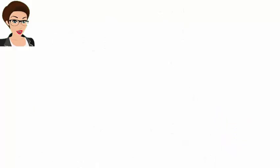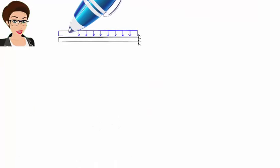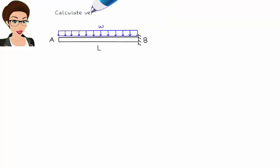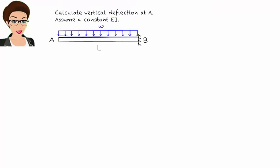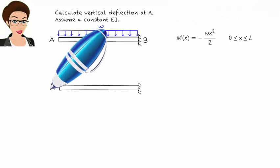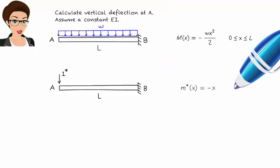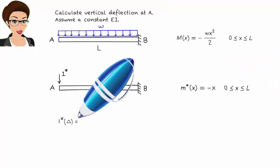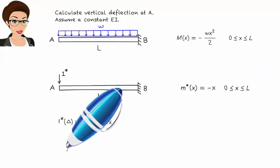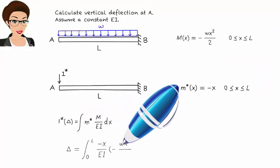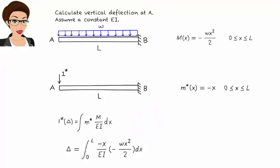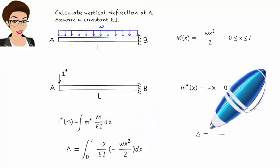Here is another example: a cantilever beam subjected to a uniformly distributed load. Let's calculate its vertical deflection at A. Assume constant EI. We start by writing the moment equation for the beam. Now, remove the real load and place a unit virtual load at A. Write the moment equation due to this unit load. The virtual work method equation gives us the integral expression. So, vertical displacement on the cantilever at A is the computed result.